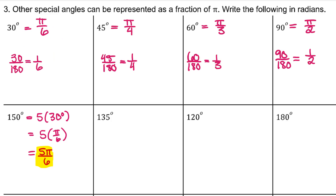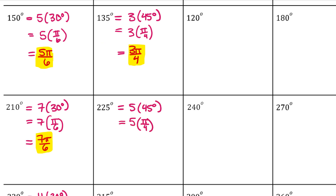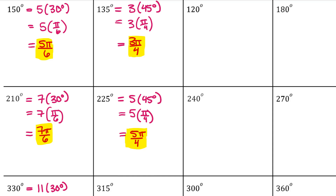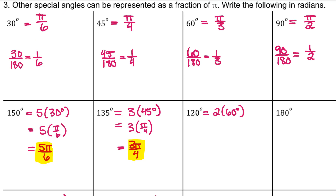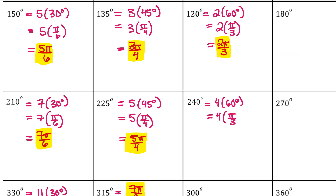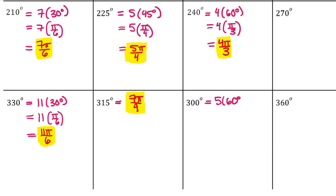135 is a multiple of 45 — that would be 3 forty-five-degree angles — so 3 times pi over 4, the radian equivalent of 45 degrees, which is 3 pi over 4. 225 is 5 forty-five-degree angles, so 5 pi over 4. And 315 is 7 forty-five-degree angles, so 7 pi over 4. 120 is 2 sixty-degree angles, so 2 pi over 3. 240 is 4 sixty-degree angles. 300 is 5 sixty-degree angles, so 5 pi over 3.